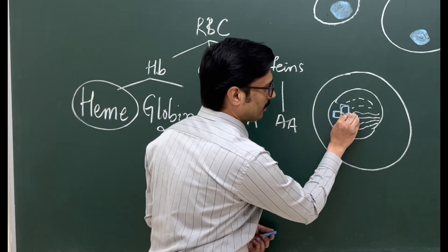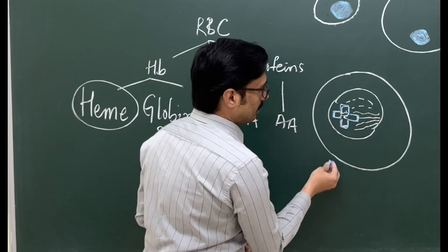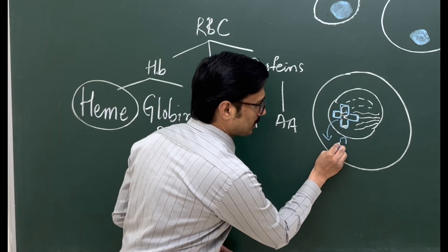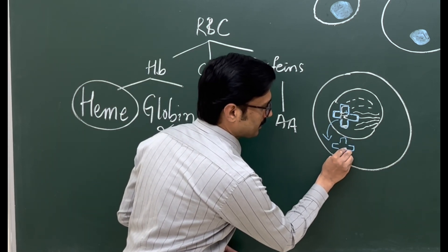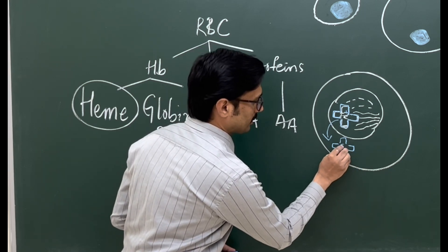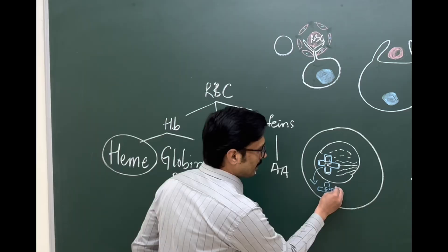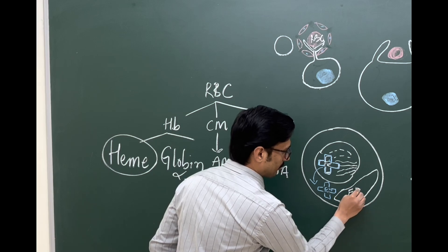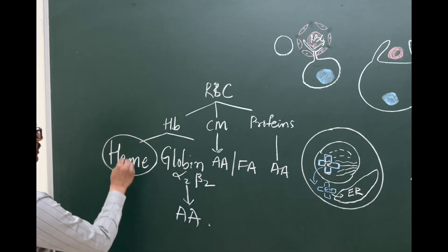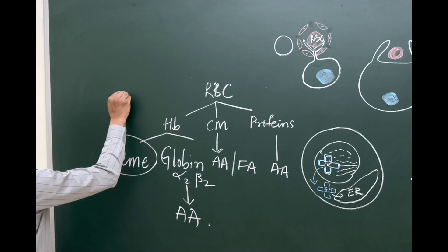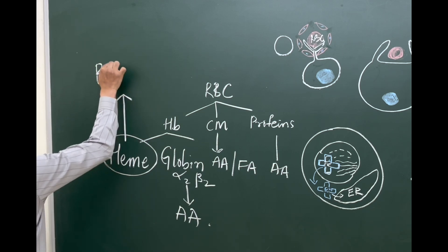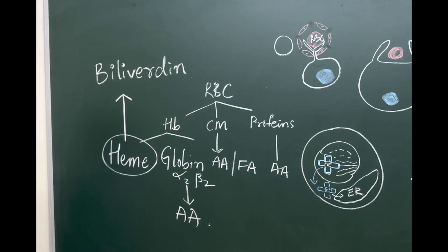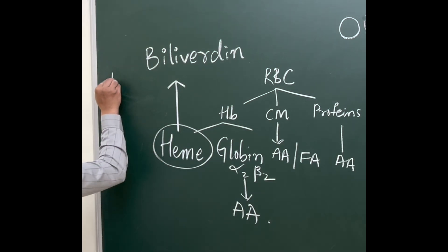The heme is released into the cytoplasm and is picked up by the endoplasmic reticulum. Within the endoplasmic reticulum, this heme is converted to biliverdin by the microsomal enzyme heme oxygenase.